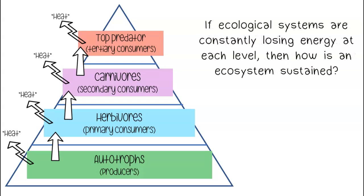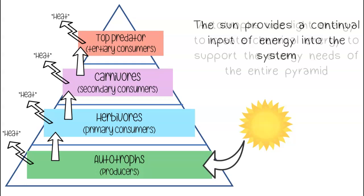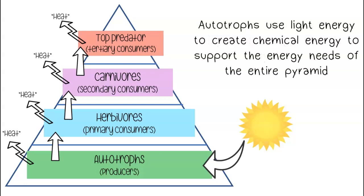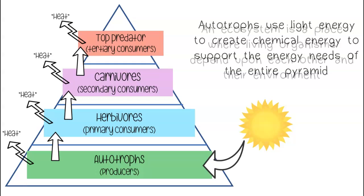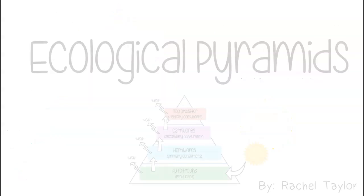If ecological systems are constantly losing energy at each level, then how is an ecosystem sustained? The sun provides a continual input of energy into the system. Autotrophs use light energy to create chemical energy to support the energy needs of the entire pyramid. An ecosystem is a place where living organisms depend upon each other and their environment.